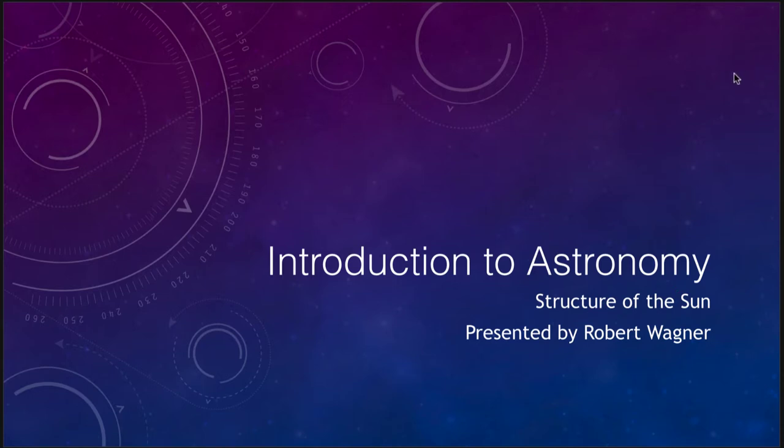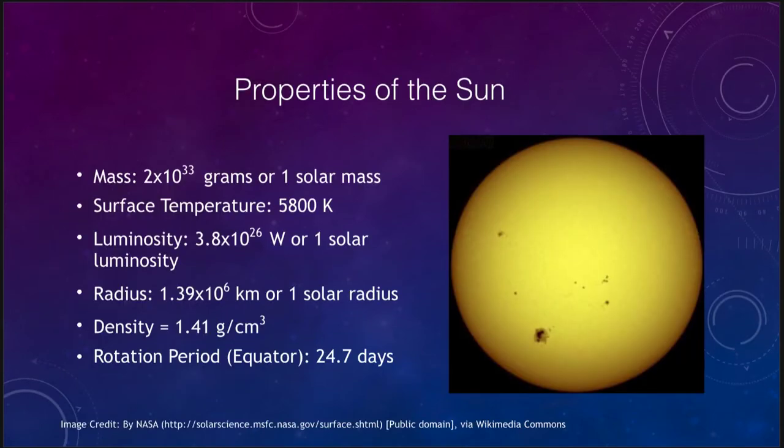Let's get started and look at a picture of the Sun here and here we see an example of the Sun and some of the basic properties. The Sun is very big, it has 2 times 10 to the 33rd grams of material in it, so we refer to that as one solar mass and can use that to compare it to other stars. Its surface temperature is 5800 Kelvin, much hotter than anything else you are familiar with. The luminosity of the Sun at 3.8 times 10 to the 26 watts, again we refer to this as one solar luminosity which allows us to compare it to other stars.